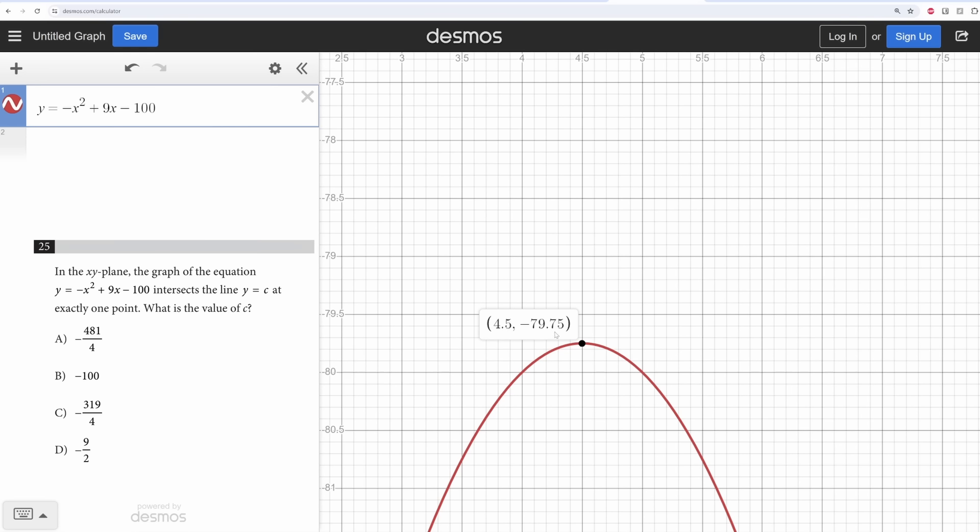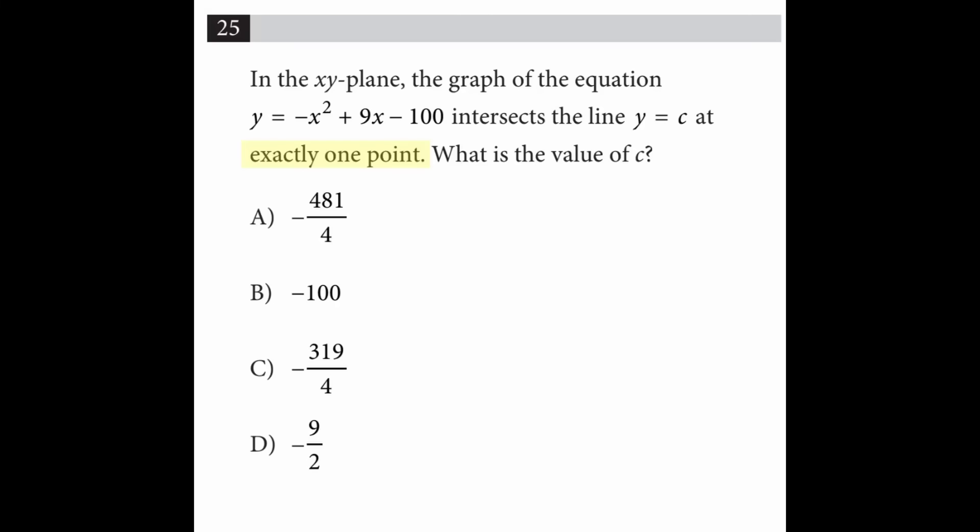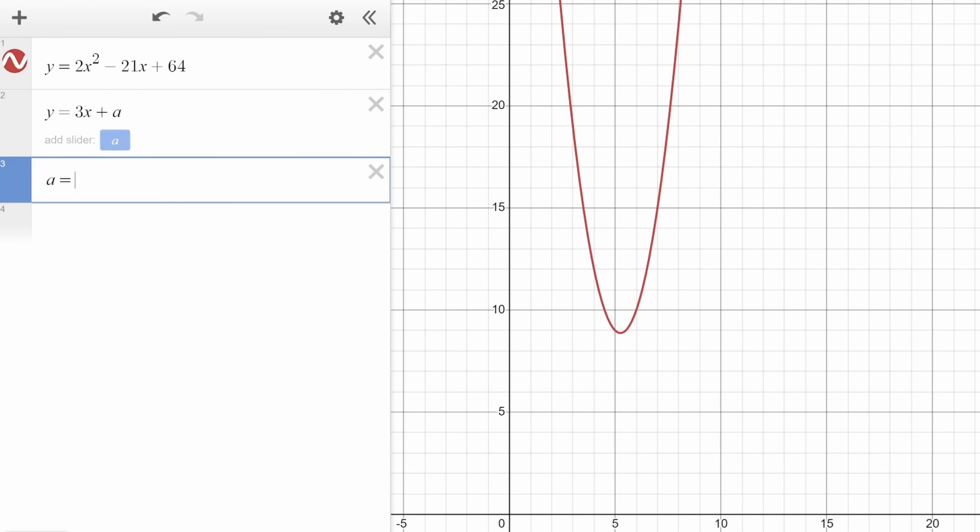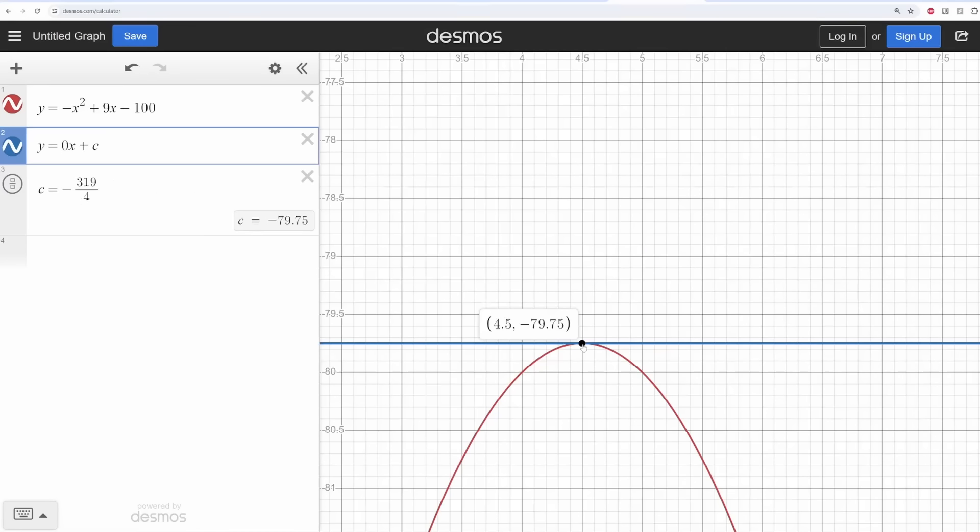The reason I went through this whole laborious process is that this is what most of my students do, and I want you to avoid this mistake. When there is one solution or one point of intersection between a quadratic and a horizontal line, it's at the vertex. Don't forget that. Now, you might get unlucky and College Board just gives you a problem where the line is not horizontal, at which point you kind of have to plug in every single answer choice. But most of the time, the line is going to be horizontal, and all you're doing is finding the vertex.